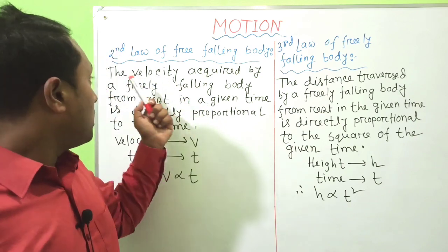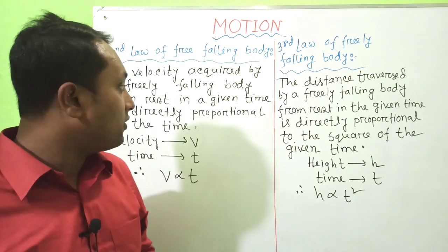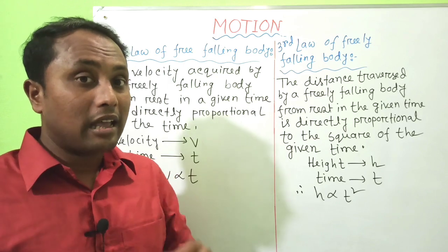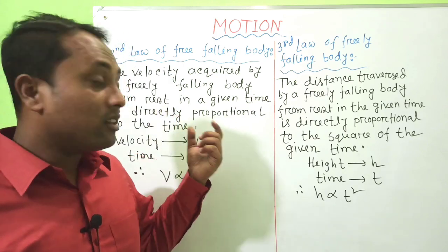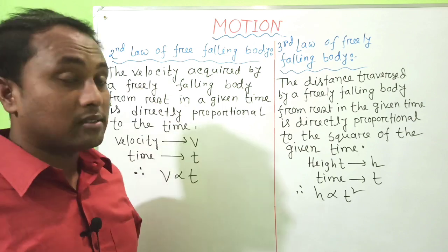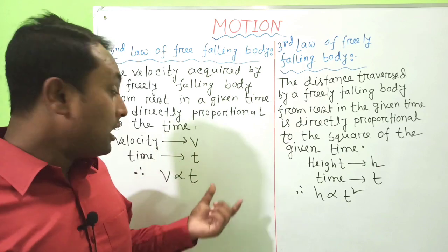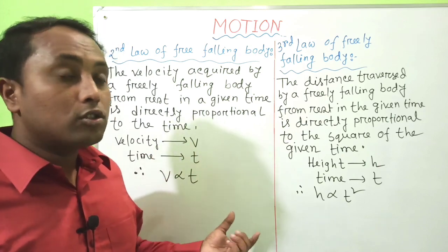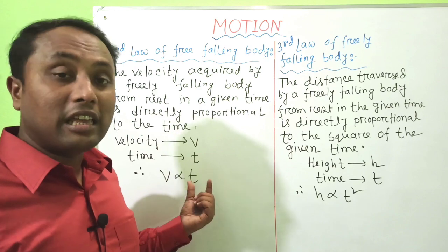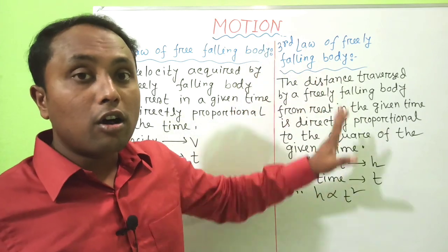The next is the Second Law of Freely Falling Body: the velocity acquired by a freely falling body from rest in a given time is directly proportional to the time. That means if you release an object from rest and the falling time increases, the velocity will definitely increase. We can write: v ∝ t.